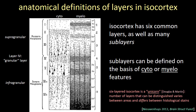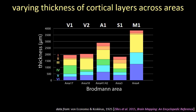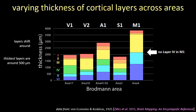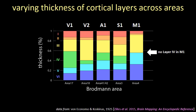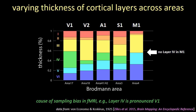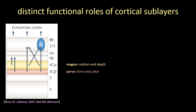The number of layers that can be distinguished really varies a lot between areas and differs between different histological stains — six-layered isocortex is a bit of a unicorn. There are also varying thicknesses of cortical layers across areas; the layers really shift around a lot, even between adjacent areas like V1 and V2. Notably, the thickest layers are around 500 microns, meaning we would need voxels of about 200 microns to resolve activity within them — still not really achievable. So in laminar fMRI today, we very rarely fully resolve the layers. Normalizing thicknesses by cortical thickness reveals that some layers occupy very large percentages in certain areas, which could cause a sampling bias — for example, layer four is very pronounced in V1.